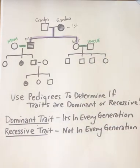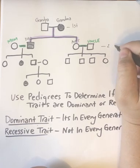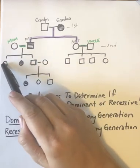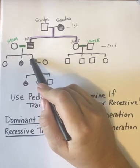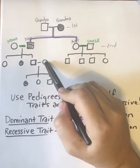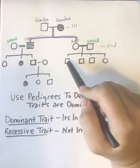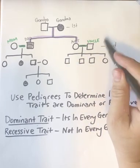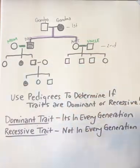In the second generation, they had their own children. My mom and dad had three children: my older sister, I'm the middle, and then I have a brother. My sister has two children. My aunt and uncle had three sons and a daughter. I'm only going to draw this far to help you see the generations.